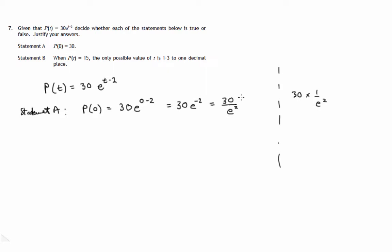For this to equal 30, we would need 30 divided by 1, meaning e squared would have to equal 1. But e squared is not equal to 1 — e is 2.7 something, and 2.7 something squared is certainly not 1. So since e squared is not equal to 1, when we replace t by 0 we do not get 30. The statement is false.